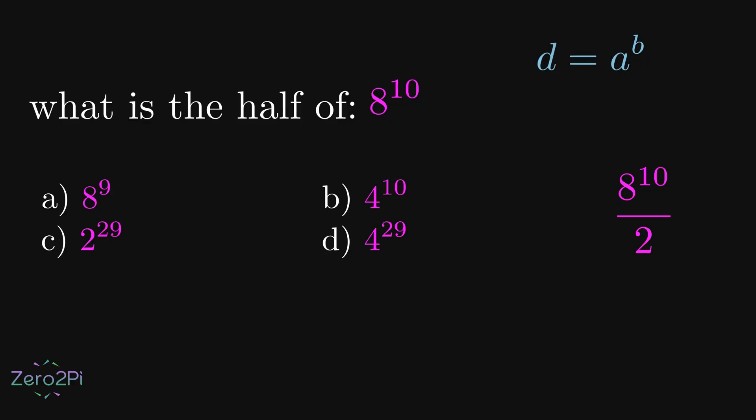All right, so first look at this formula and imagine d represents eight and a represents two. Since we have eight to some power over here, we can write d to the c representing the numerator. Now let's put the value of d to get a to the bc.